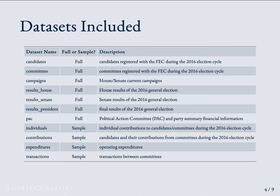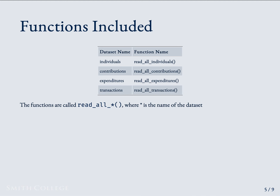The following table summarizes all the datasets that are included in the FEC16 package. The first column gives the name of the dataset. The second column tells us if the dataset is full or if it is included as a sample. The third column gives a short description of the dataset. For the datasets that are not included in full, the package contains functions that retrieve the entire dataset.